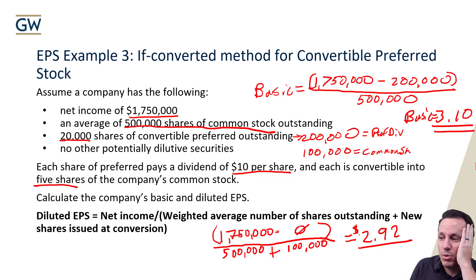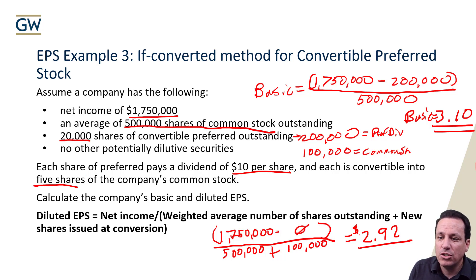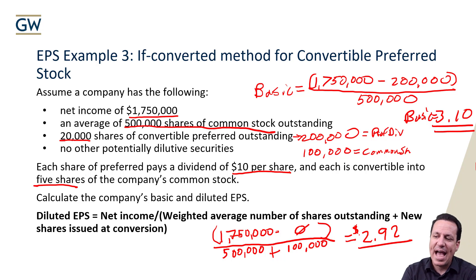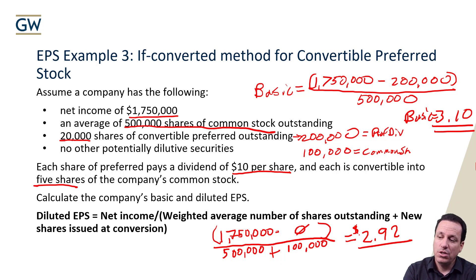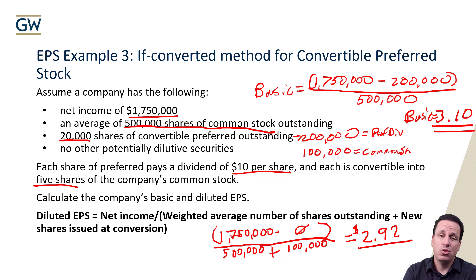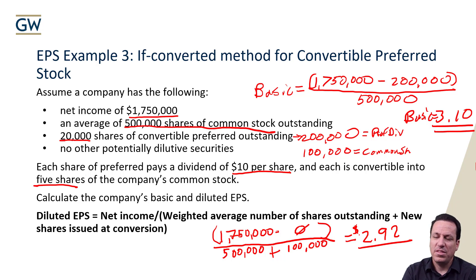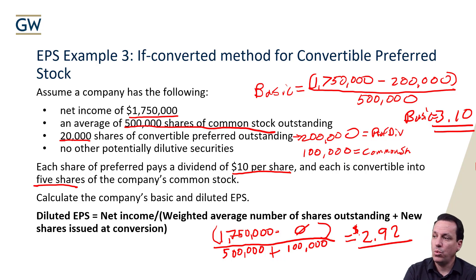You'll notice the diluted EPS of $2.92 is lower than the basic EPS of $3.10. That's because in diluted EPS we're always adding to the denominator, and in this case we also removed something from the numerator. And looking at it: five shares times $2.92 is about $14.60, which is actually more than the $10 preferred dividend, so there is value in converting. The $2.92 is the diluted earnings per share, and $3.10 is the basic.